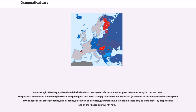Cases are based fundamentally on changes to the noun to indicate the noun's role in the sentence, one of the defining features of so-called fusional languages. Old English was a fusional language, but modern English does not work this way. Modern English has largely abandoned the inflectional case system of Proto-Indo-European in favor of analytic constructions. For other pronouns and all nouns, adjectives, and articles, grammatical function is indicated only by word order, by prepositions, and by the Saxon genitive -s.